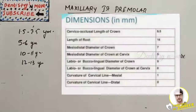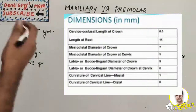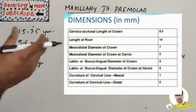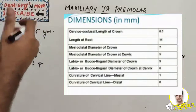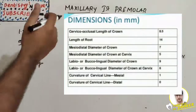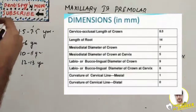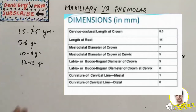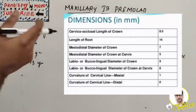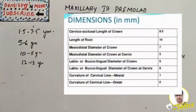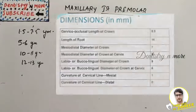The dimensions: length of crown is 8.5mm and root is 14mm. Mesiodistal diameter of crown is 7mm at contact and 5mm at cervix. Buccolingual is 9mm at contact and 8mm at cervix. Curvature of the cervical line on mesial is 1mm and on distal is 0mm — the distal side is zero.